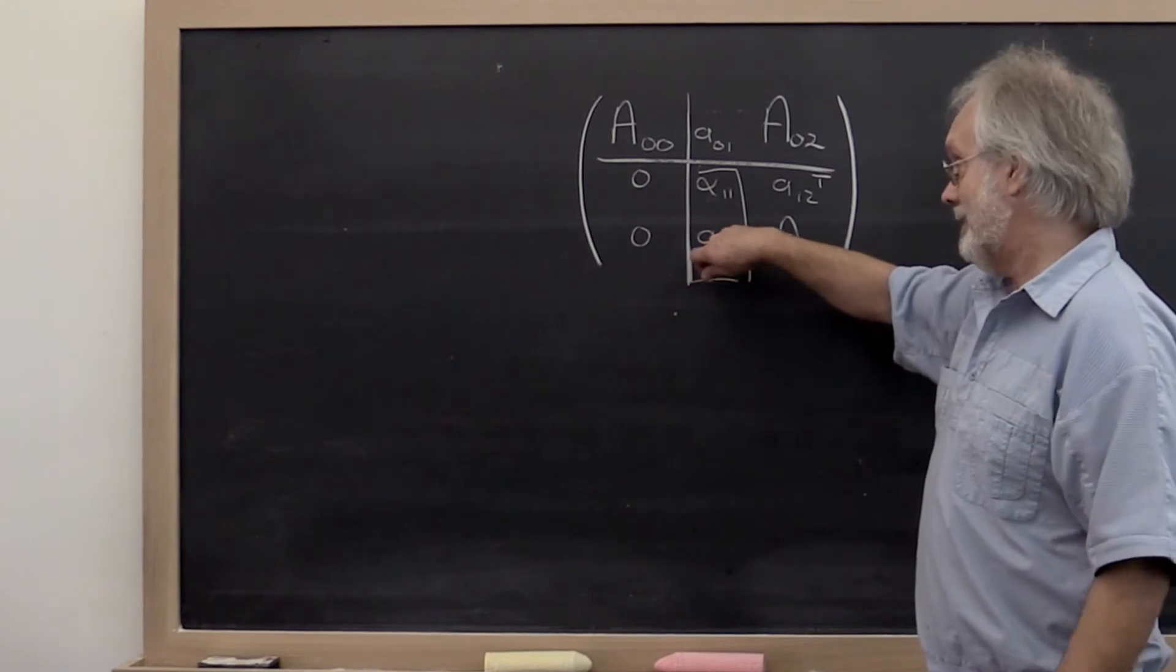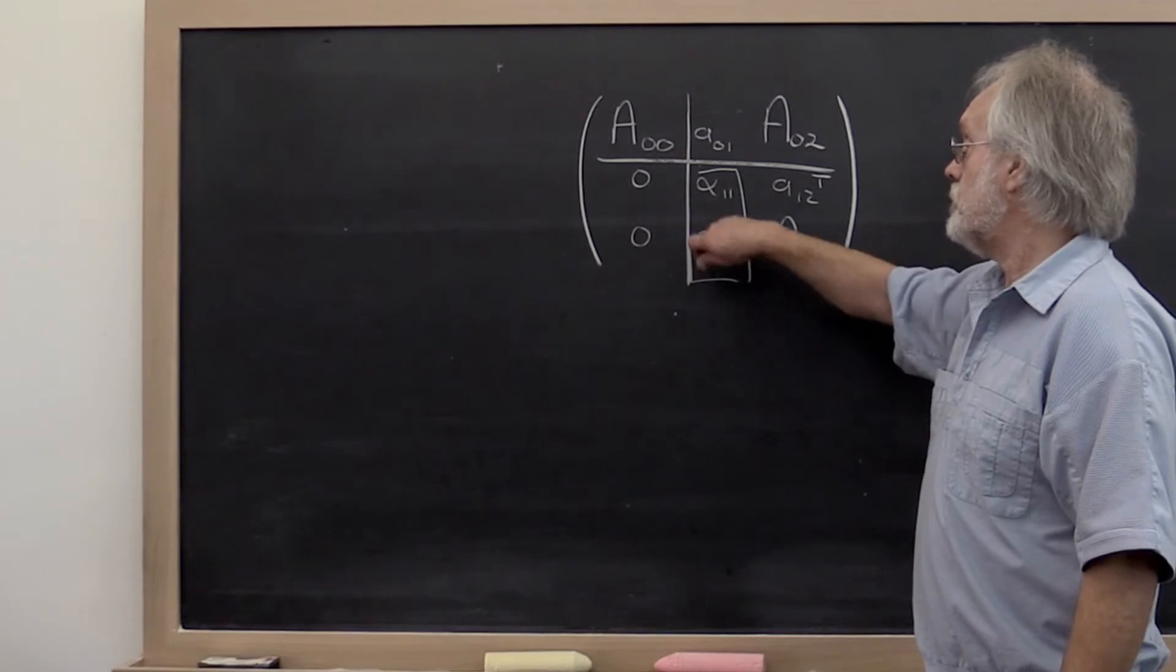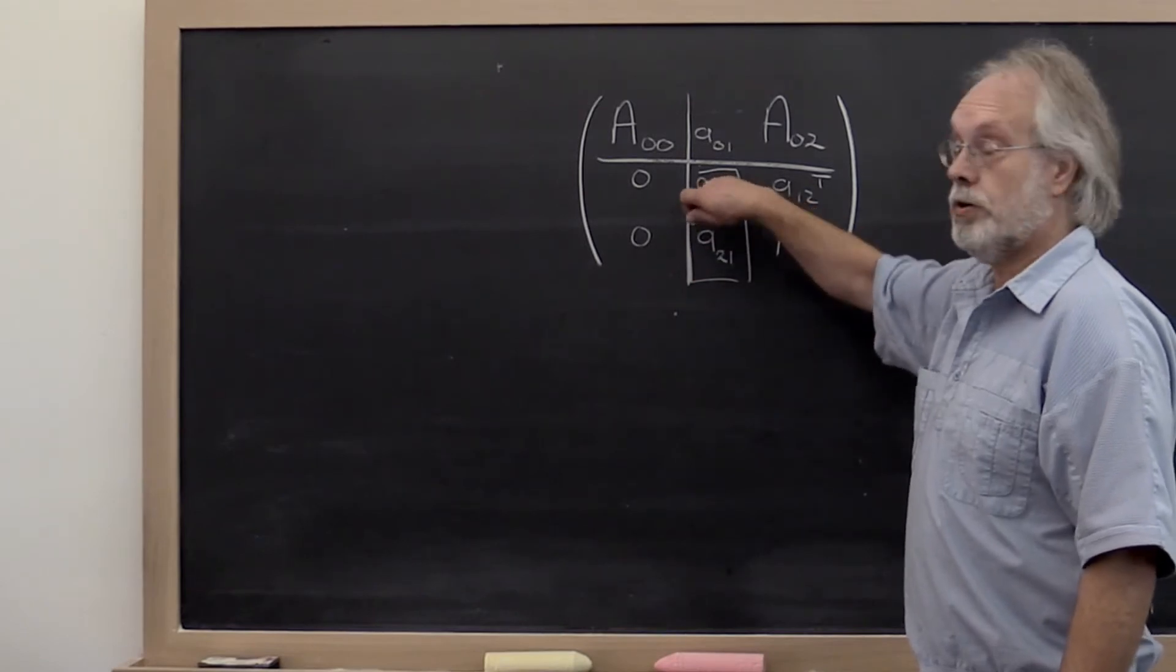Once we find the value with largest magnitude, then that's the row that we swap with the row that is currently at the top.